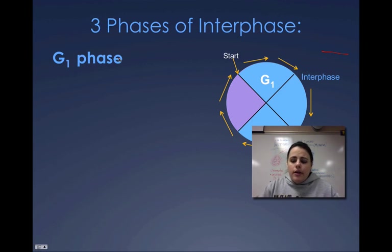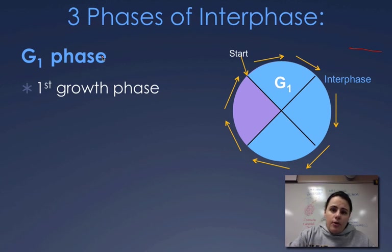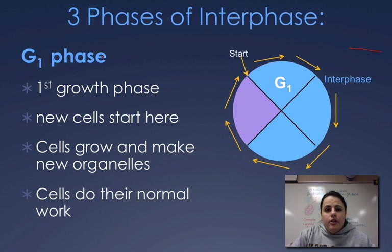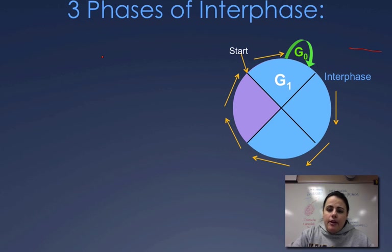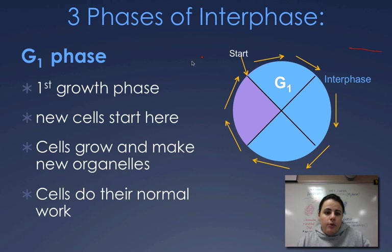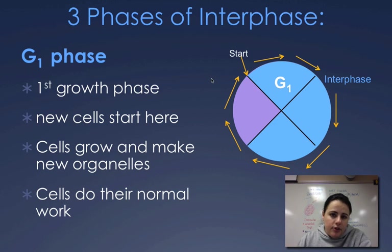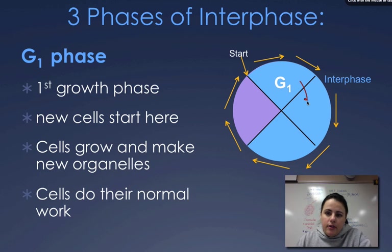The first phase is G1, which stands for first growth. It's the first phase that a cell always starts in. Here, the cell is going to get a little bigger in size, it's going to make some new organelles because it's a new cell, and it's going to start making its proteins and doing what it's supposed to be doing. If a cell gets a signal from the DNA that it needs to make more copies of itself, then it's going to proceed into the next phase, which is S phase.